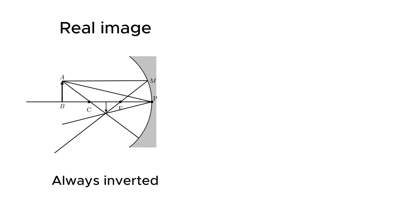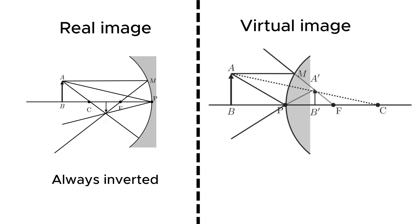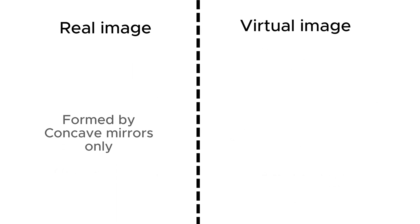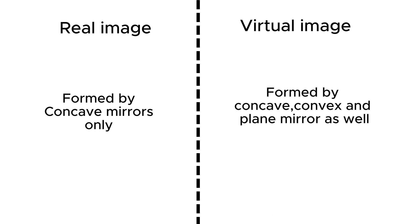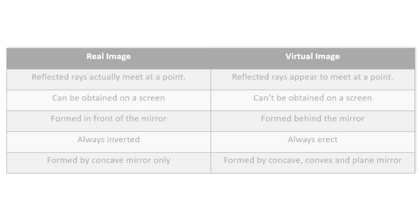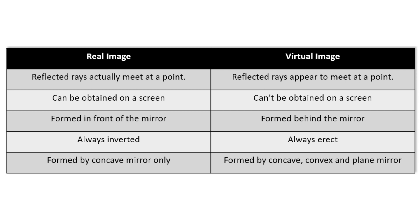A real image is always inverted, whereas a virtual image is always erect. A real image is formed only by a concave mirror. However, a virtual image can be formed by concave, convex, and plane mirrors. This table summarizes all the differences.